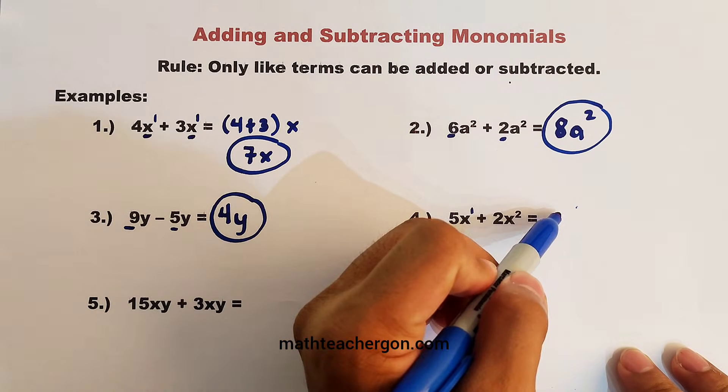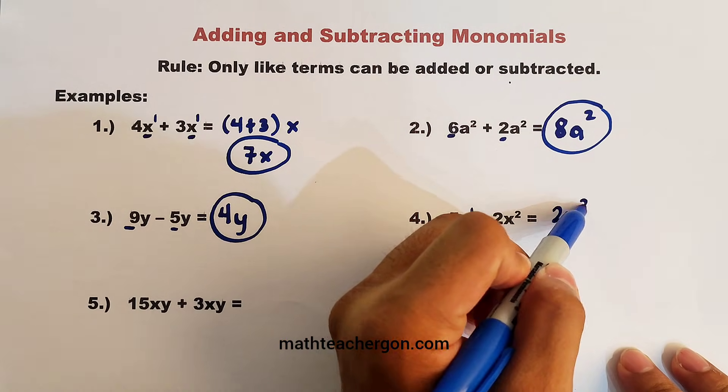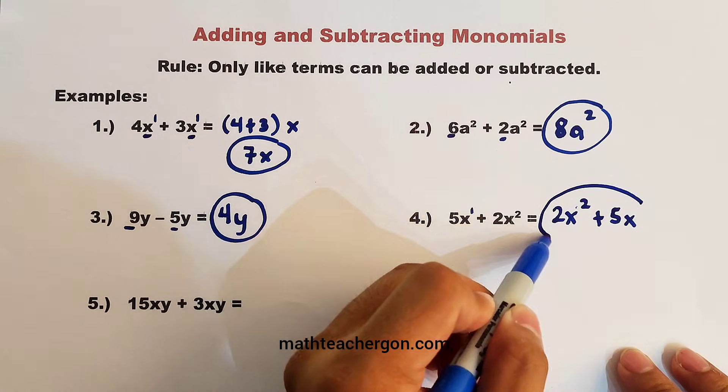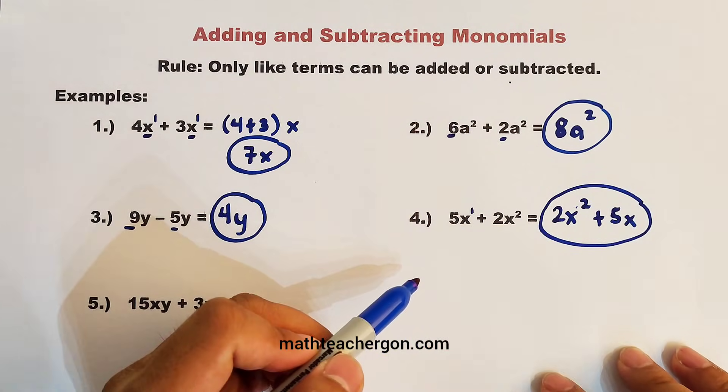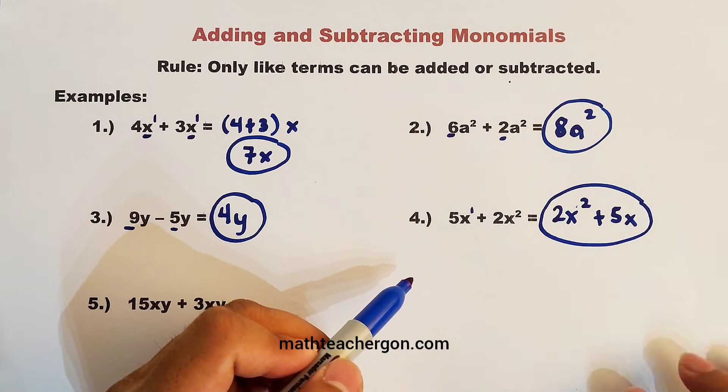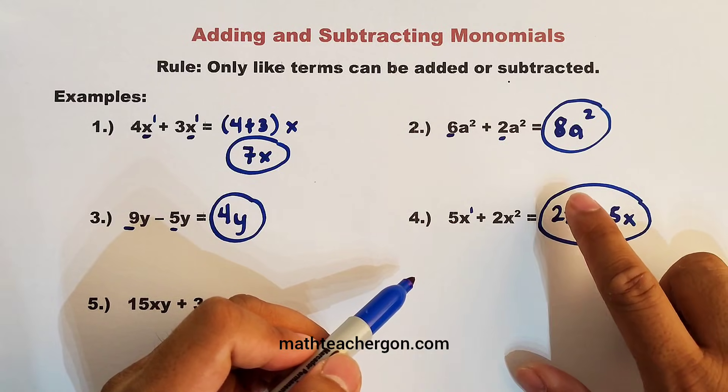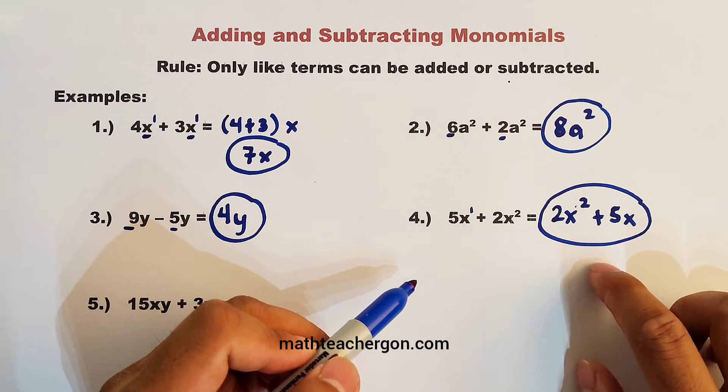So they are different. So what we are going to do, the answer here is simply 2x squared plus 5x. This is the correct answer. We cannot combine them, but we can arrange them, in which the first term must be the term with the variable with the greater exponent. And this is the answer.